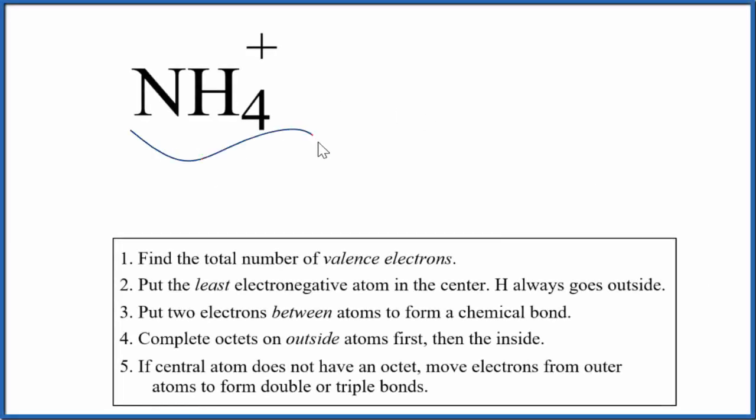Let's draw the Lewis structure for NH4+. This is called the ammonium ion, and we know it's an ion because it has a charge after the formula here. So for Lewis structures, the first thing we need to do is count the total number of valence electrons, and we have to remember this plus up here.